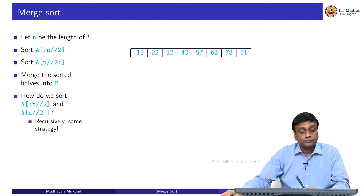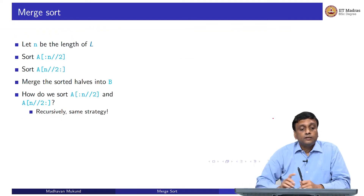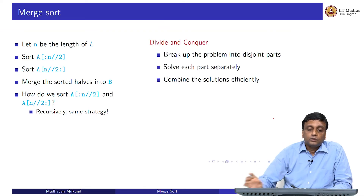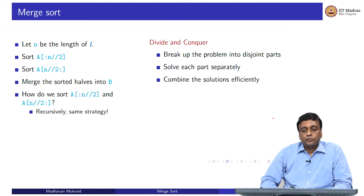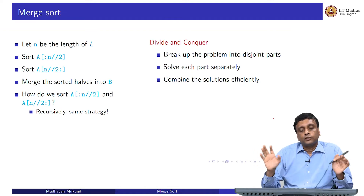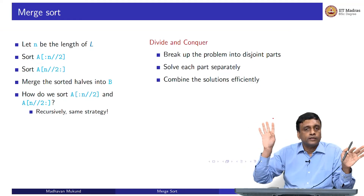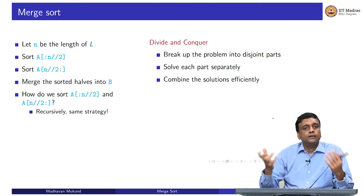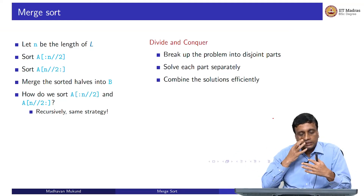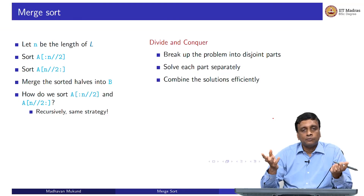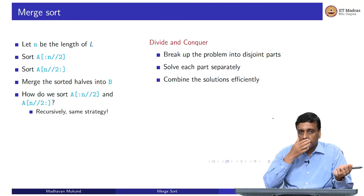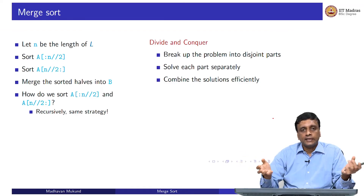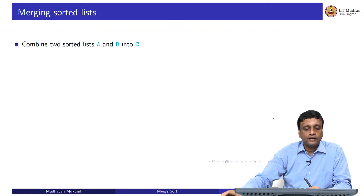Merge sort is an example of divide and conquer: you break up the problem into disjoint parts, solve each part separately — the two TAs could go off and work without talking to each other — and then when the solutions are done, you combine them. There are two parts: breaking it up (which in this case is easy — just take the first half and the second half) and the combining part, where I take the solutions from each TA and merge them. That is divide and conquer.